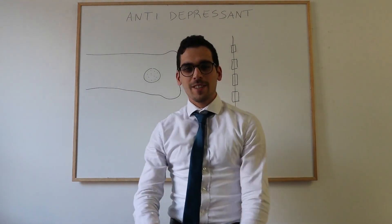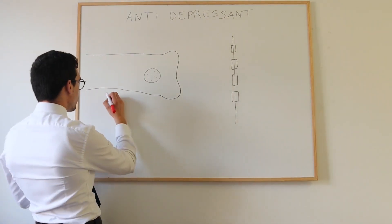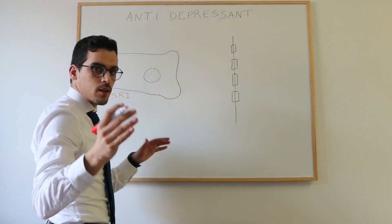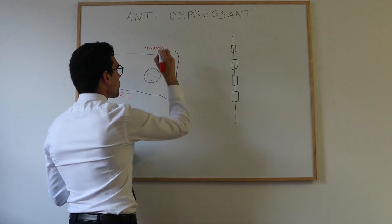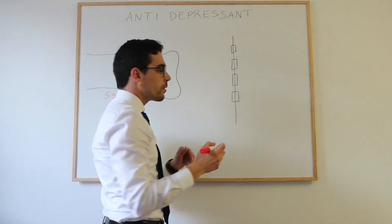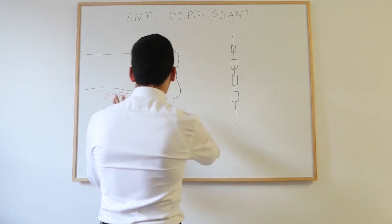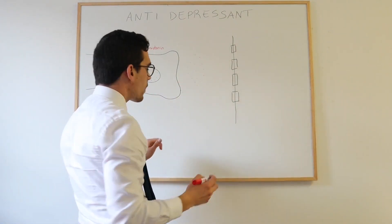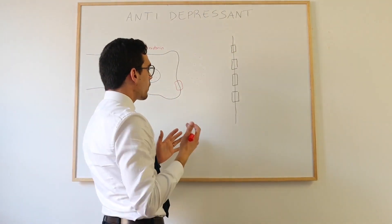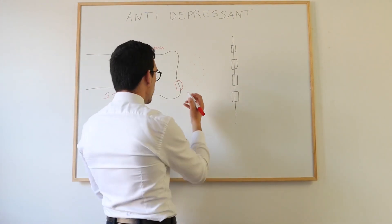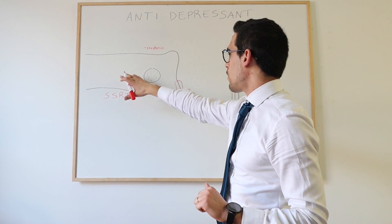The first class we're going to look at is the SSRIs — the selective serotonin reuptake inhibitors. Serotonin, shown in red, is stored in vesicles. On normal activity, serotonin is released into the synapse where it acts on our effector. Neurons also possess receptors on the pre-synaptic neuron that allow reabsorption of serotonin back — in the case of serotonin, these are called SERT.